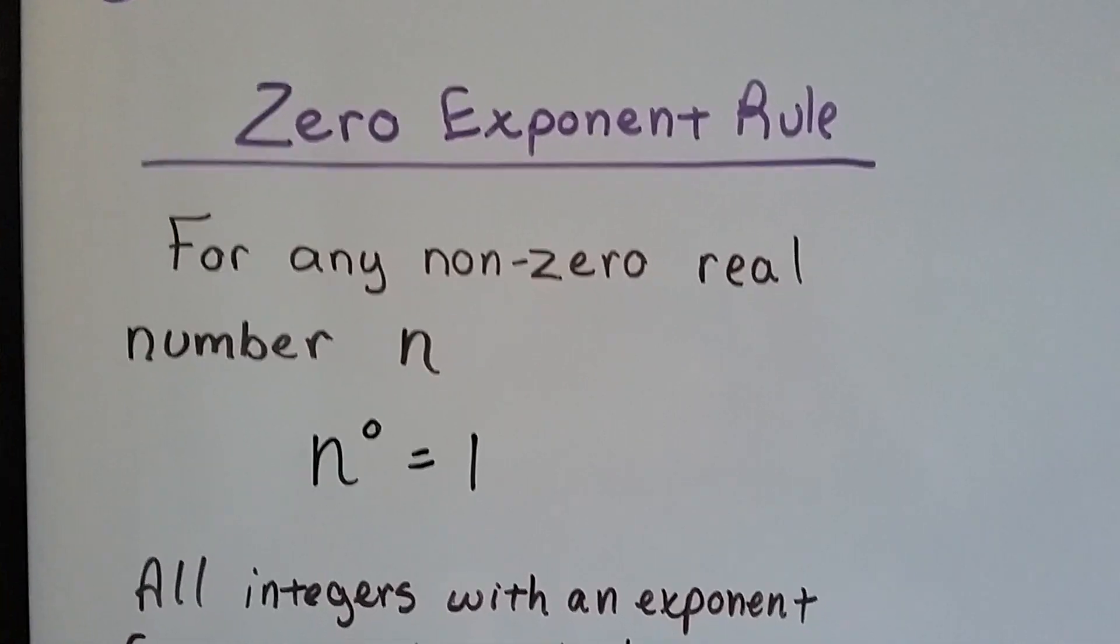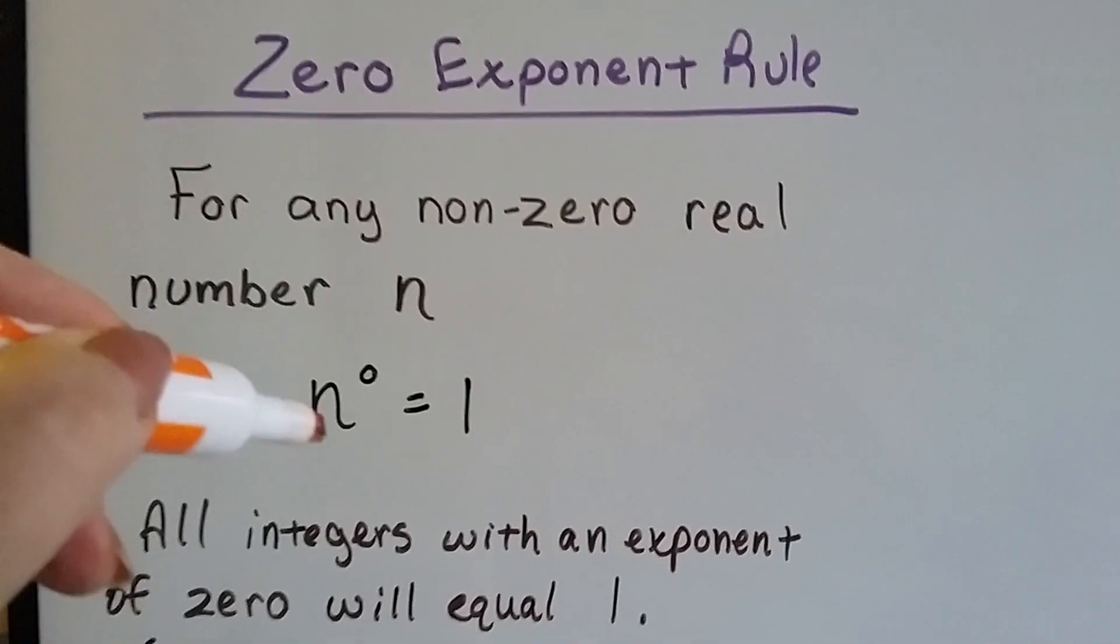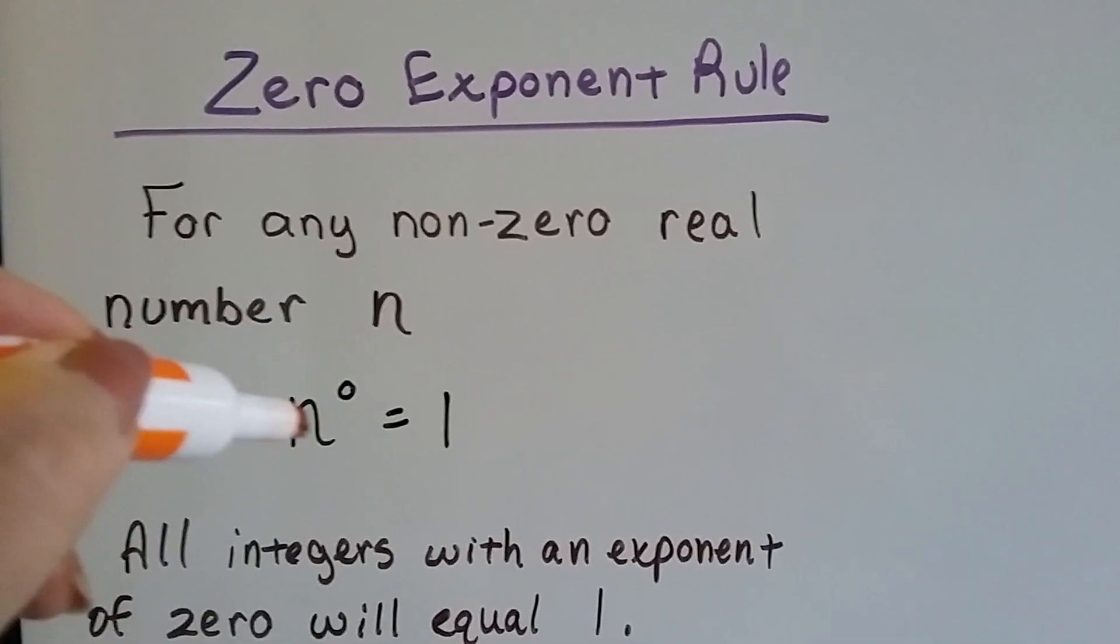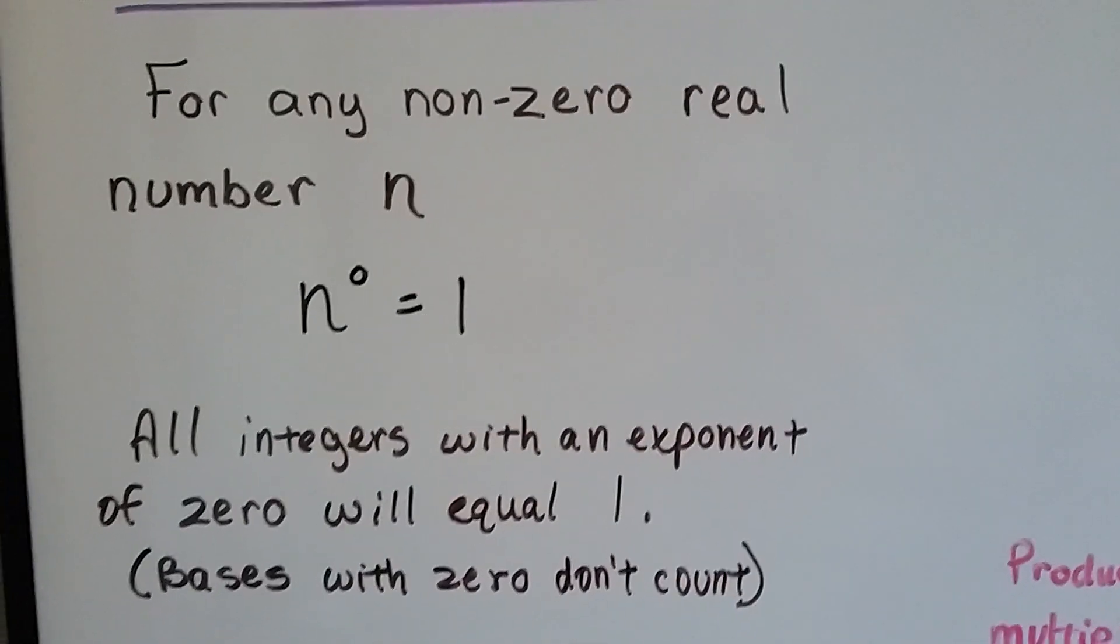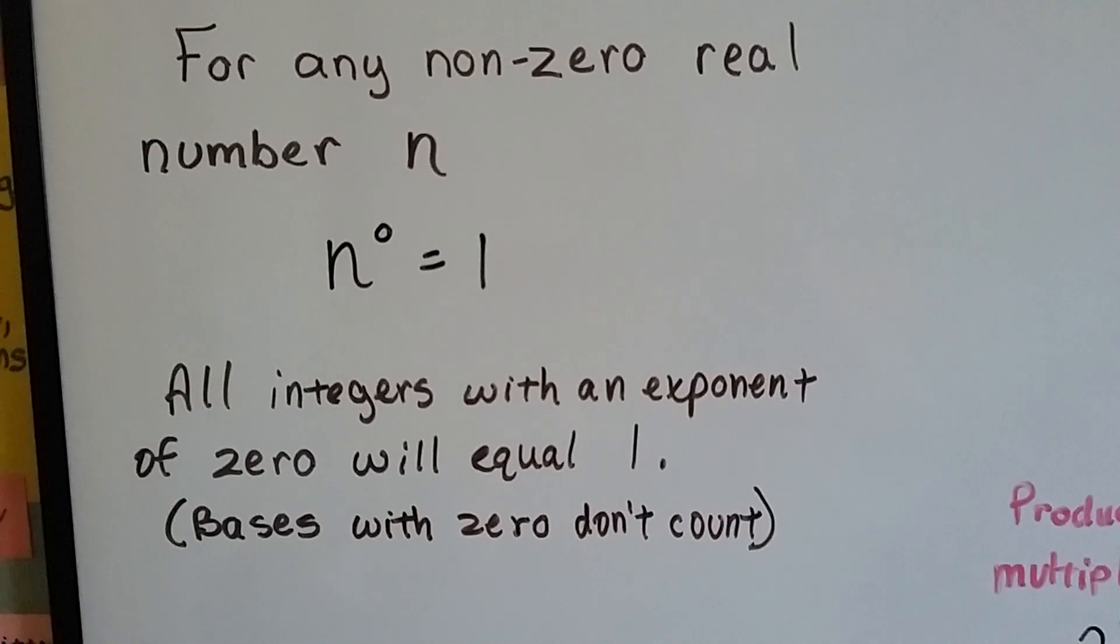For any non-zero real number n, where n is not zero, it's got a zero exponent but it's not zero, it's going to equal 1. So all integers with an exponent of zero are going to equal 1. Bases with zeroes don't count.